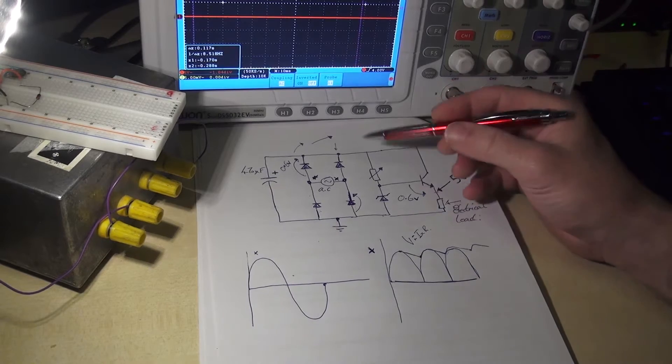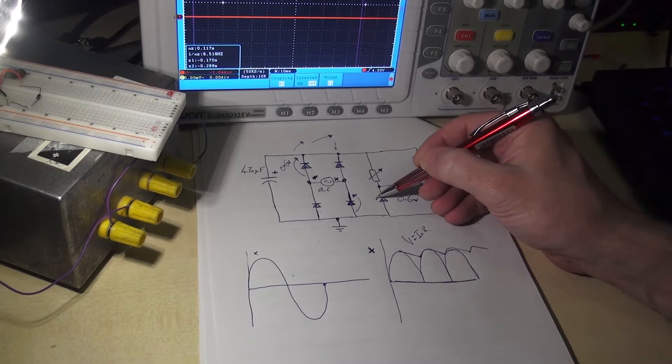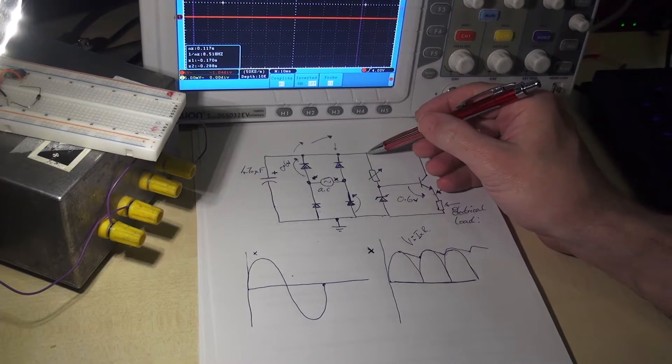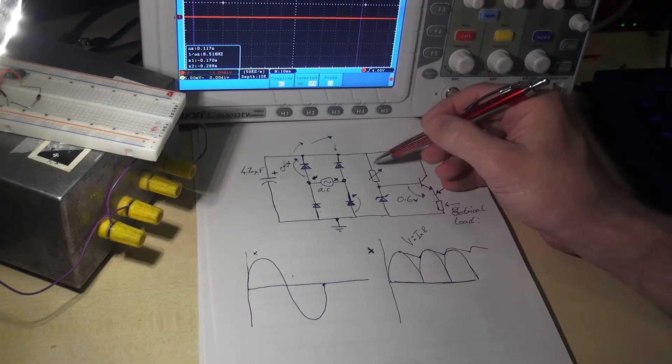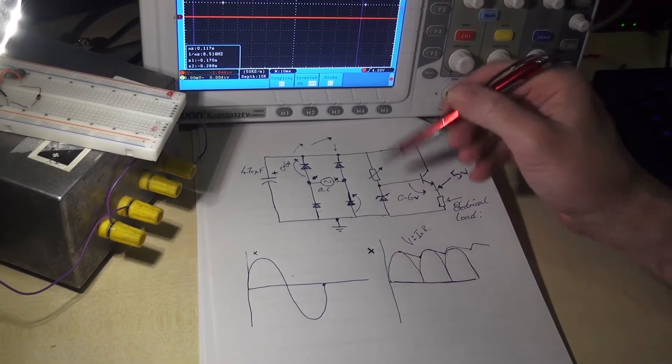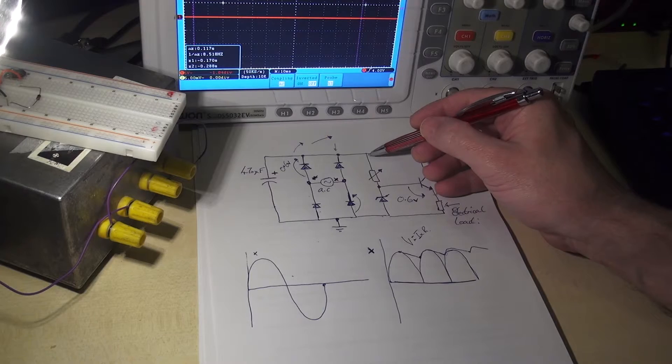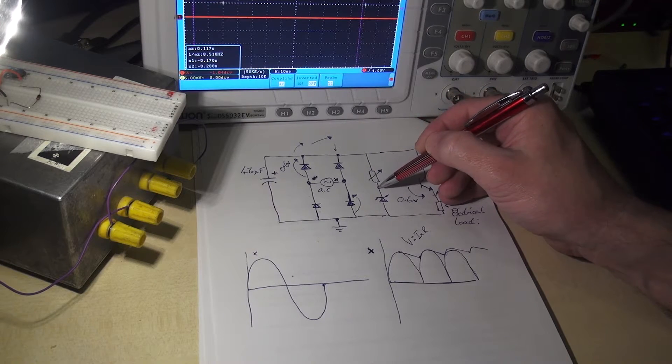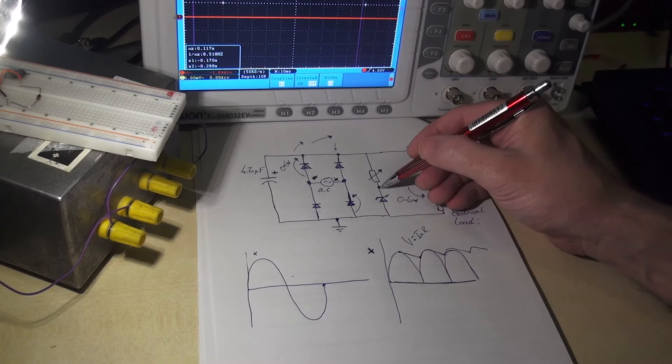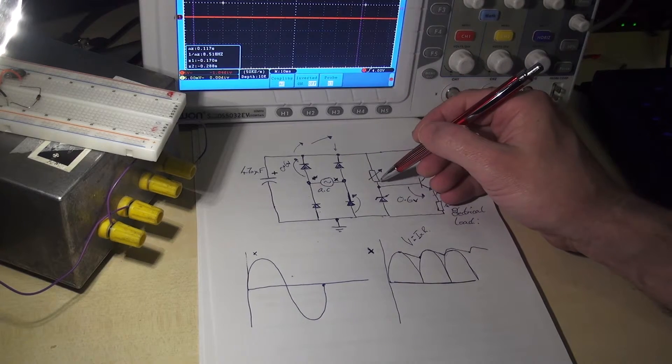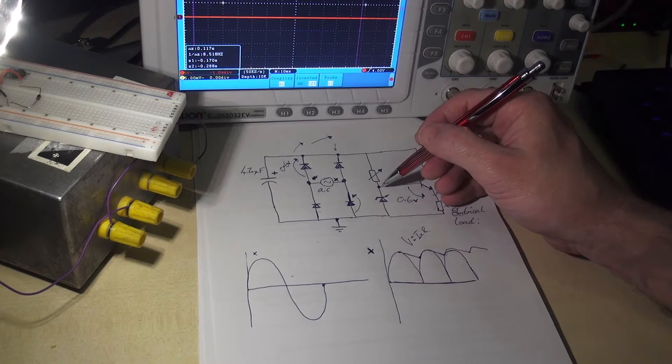So the next part of the circuit, we have a Zener diode, and the Zener diode has a resistor in series with it. And what the resistor is really doing in this circuit is maintaining what's called the Zener current. The Zener will need roughly 5 to 10 milliamps in order to operate. So the whole point of this resistor here is to ensure that the Zener gets its operating current.